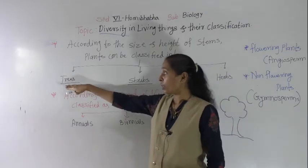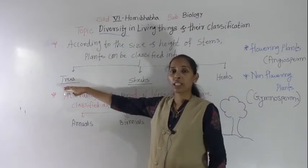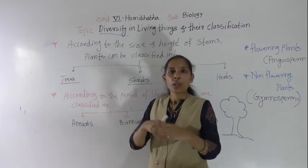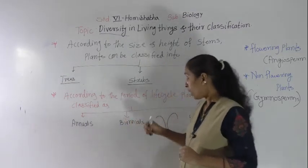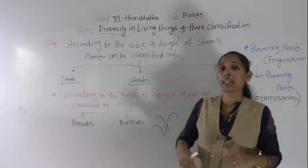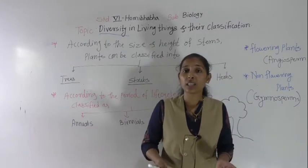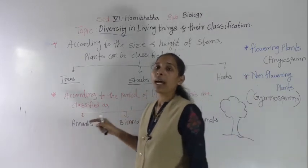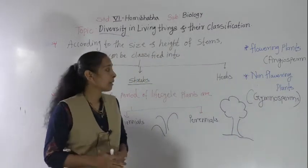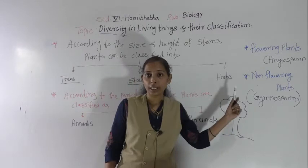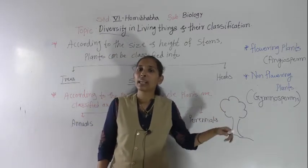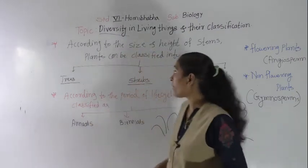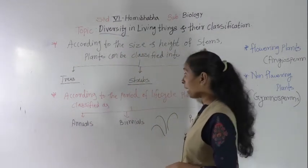These are the three categories based on size and height of the stem: trees, shrubs, and herbs. Examples of trees include peepal, mango, cashew nut, chiku, and jackfruit. Examples of shrubs include rose, hibiscus, lemon, and orange. Examples of herbs include tomato, mustard, and sunflower. This is the classification of plants on the basis of size and height of stem.